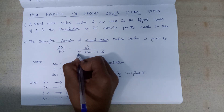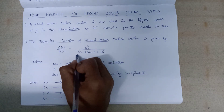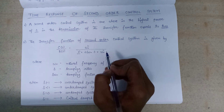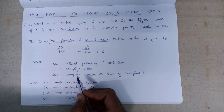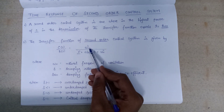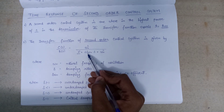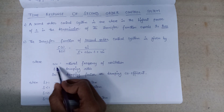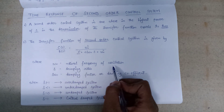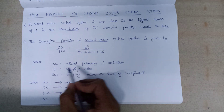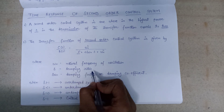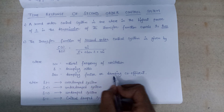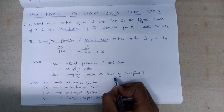Why is it second order? Because the highest power of s in the denominator is exactly equal to 2 only. That's why it is a second order control system. In this expression there are three terms: first one is omega_n, second one is delta, and third one is delta omega_n. Here omega_n is the natural frequency of oscillations, delta is termed as the damping ratio, and delta omega_n combined is termed as the damping factor or damping coefficient.